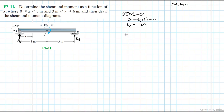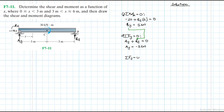Let's find what Ay is. Summation of forces in the y equal to 0, going up being our reference. We have Ay plus By equal to 0. We've already calculated By. Therefore, our Ay is just going to be equal to minus 5 kilonewtons. Then summation of forces in the x direction equal to 0 — we just have Ax which is equal to 0 kilonewtons. So By is 5 kilonewtons.